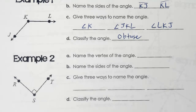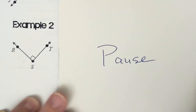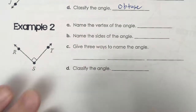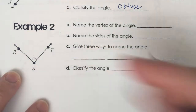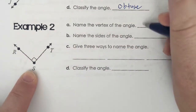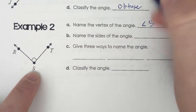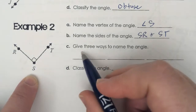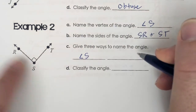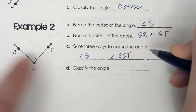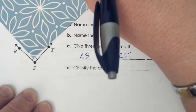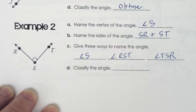Now pause and try number two on your own. The vertex is S — angle S. The sides are S to R and S to T. Three ways to name it: angle S, angle RST, and angle TSR. Classify the angle — that right there is 90 degrees, so that's a right angle.